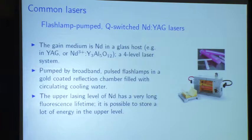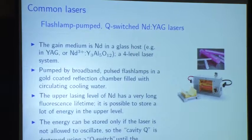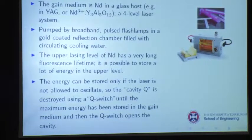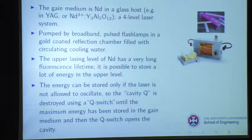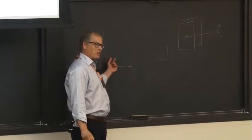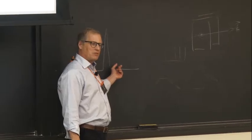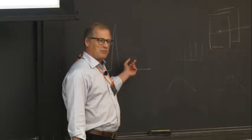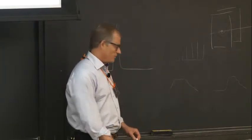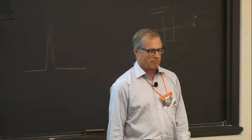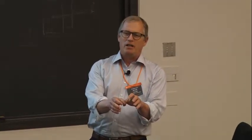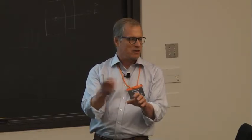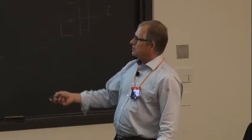The upper lasing level of neodymium is long, so you can store a lot of energy up there. The energy can only be stored if the laser is not allowed to oscillate — so the cavity Q is destroyed using a Q-switch. In electrical engineering terms, high Q means a very narrow frequency response — this is the same as Fabry-Perot finesse. The Q-switch kills the Fabry-Perot behavior — it shuts off the cavity. So you're pumping a lot of energy into the YAG rod, but the laser itself can't oscillate until the Q-switch decides to open the cavity.